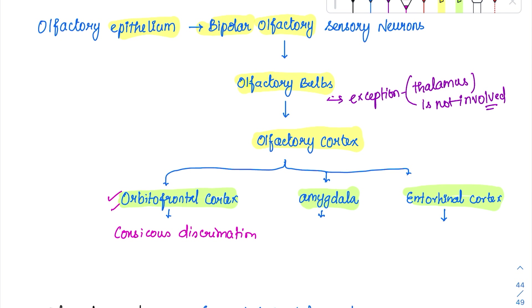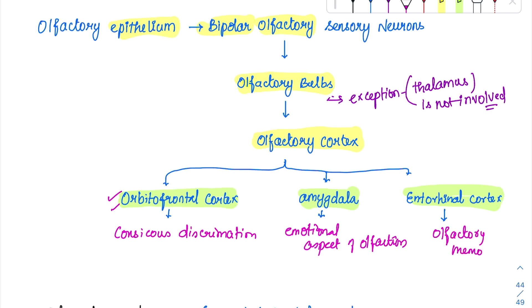The amygdala is involved in the emotional aspect of olfaction. Then the entorhinal cortex is for olfactory memories — memories related to smell are stored in the entorhinal cortex, as we also saw in the limbic system. So olfaction has three different representations in the cerebral cortex.